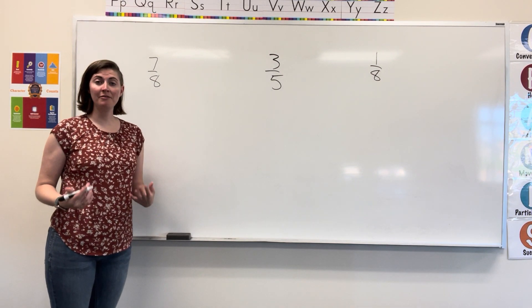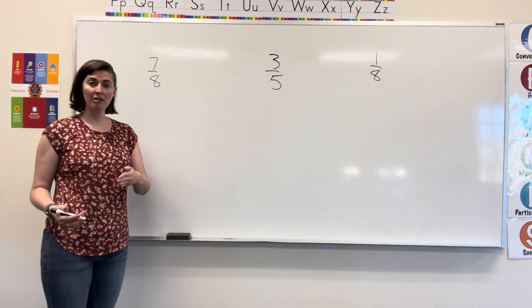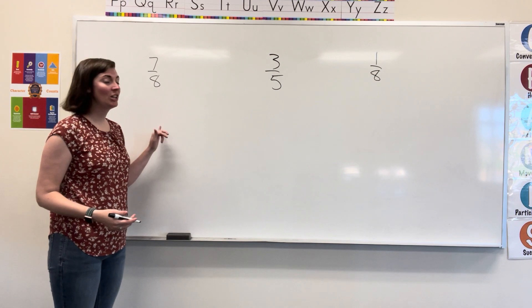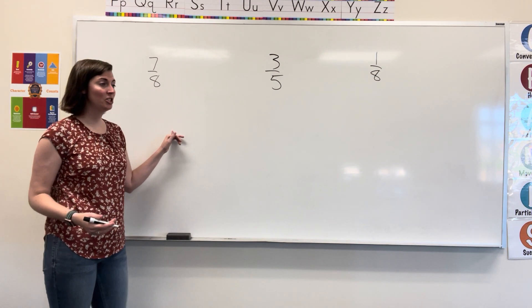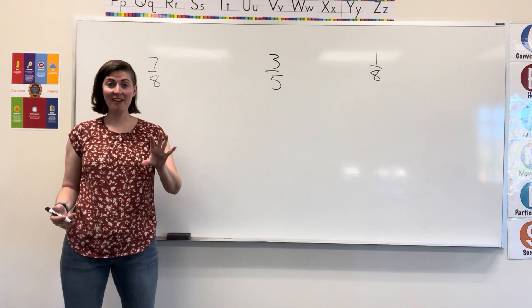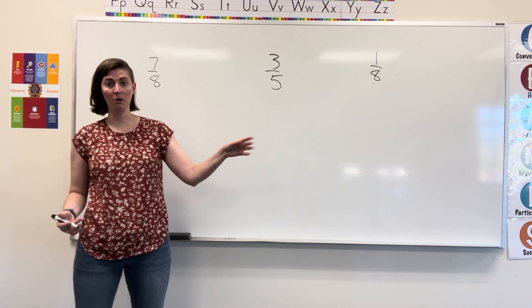In this video, we're going to be rounding fractions to the nearest benchmark. Now, these benchmarks are always zero, half, or one whole. We can actually use number lines to help us determine if that fraction is closer to the zero benchmark, the half benchmark, or all the way closer to the full one whole.